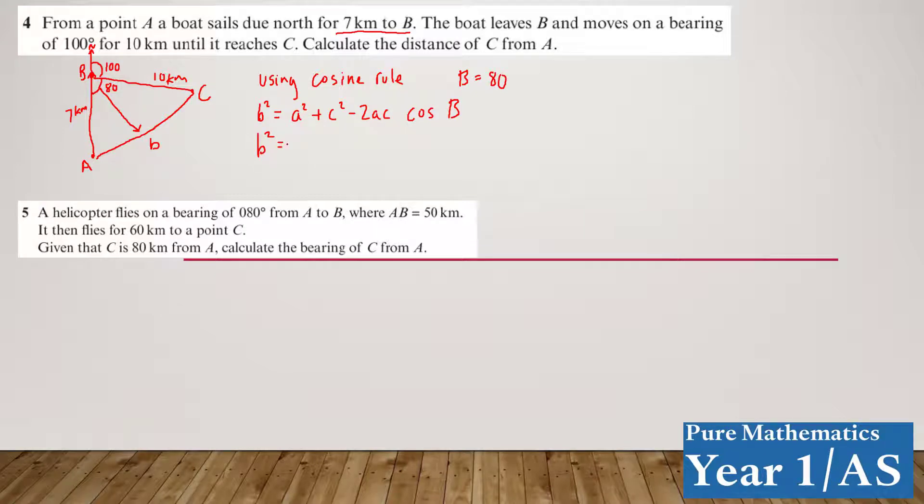And this is little b now. So B squared is going to equal 10 squared. They've labeled this nicely, so you don't need to change the letters. If they give you different letters, just change it to ABC, so you can use the formula without making a mistake, plus 7 squared, minus 2 times 10 times 7, cos 80.